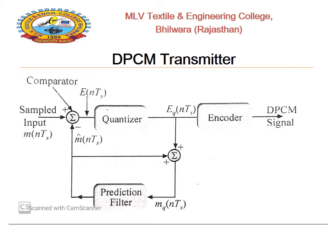Now consider the DPCM section. In the DPCM transmitter section, it works on the principle of prediction. It consists of a summer, quantizer, encoder, and prediction filter. The sampled input is given to the summer, which is connected to the quantizer. The quantizer output is given to a summer and the error signal EQ(nTs) is given to the encoder, which provides the DPCM signal. The quantizer output is also given to another summer connected with the prediction filter.